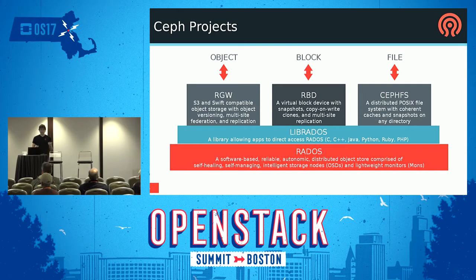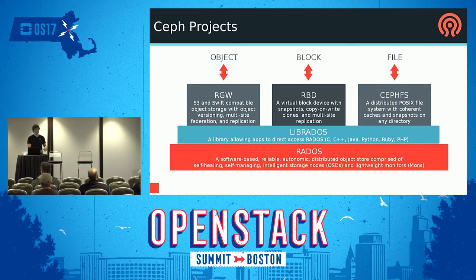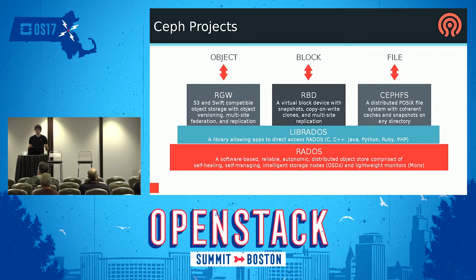The Ceph project starts with a reliable, autonomic, distributed object store — RADOS — that provides data durability and consistency mechanics. On top of that we build various interfaces: a full filesystem with a metadata server and custom client, the Rados Block Device (RBD) as a client library inside QEMU or the Linux kernel, or a Rados Gateway proxy that speaks S3 and Swift to the outside world and translates that into internal Rados operations.